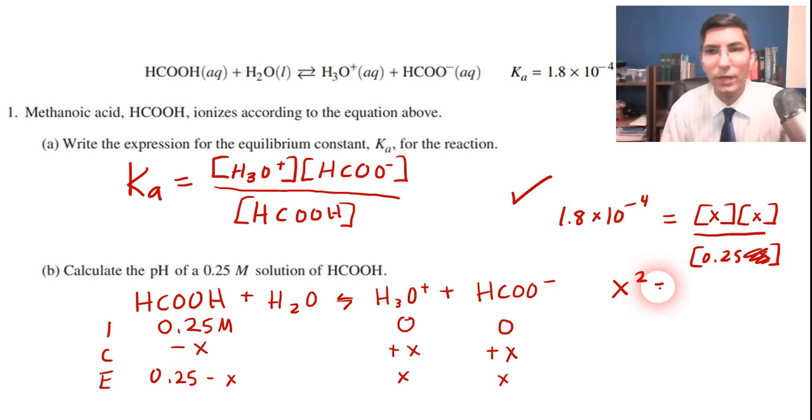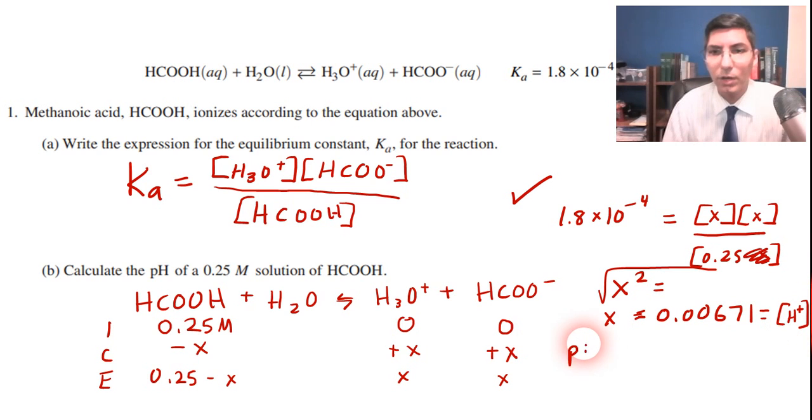This is a pretty small equilibrium constant so it's pretty safe to say that we can ignore that minus x and now we can cross multiply and solve for x. So I have x squared equals, when I took the square root of both sides I got x equals 0.00671 to three significant figures. That x as we can see here in the icebox is equal to the concentration of hydronium ion which is same as H plus. So that is our H plus. To find the pH we just take negative log of that number.